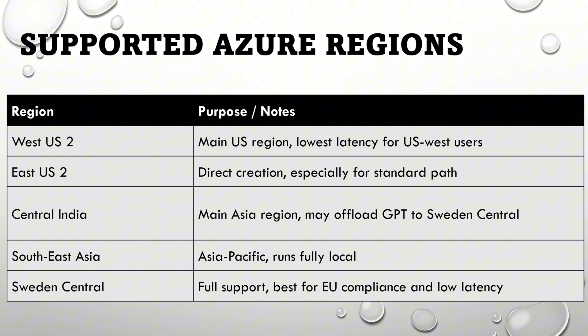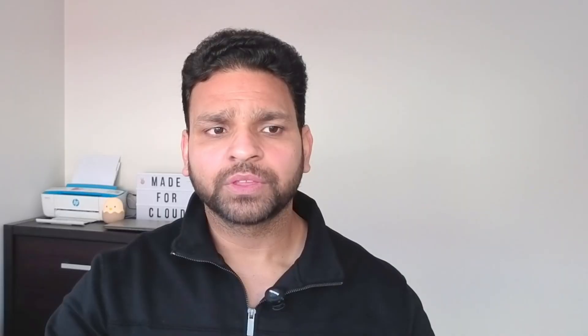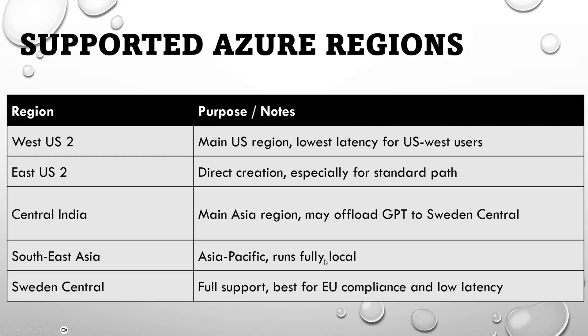Previously, real-time models were only available in two regions: East US 2 and Sweden Central. Now with Voice Live API, you can use it in West US 2, East US 2, Central India, Southeast Asia, and Sweden Central. East US 2 and Sweden Central have full support and are recommended for HIPAA and GDPR compliance. Central India may offload data to Sweden Central, while Southeast Asia runs fully local. If you're using real-time models directly, you still only have East US 2 and Sweden Central.